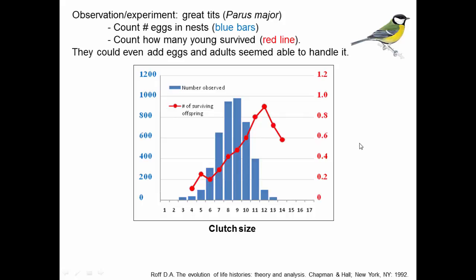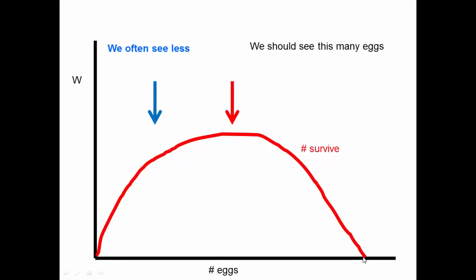This is actually a surprise. The model predicted stabilizing selection causing egg number to center around maximum fitness. But when we look in nature, birds are laying fewer eggs than we would expect based on directly observing the number of offspring that survive. Conceptually, there's a fitness peak at a certain egg number, but in nature we often see less. So we might ask: what is the cause of there being fewer offspring than we would expect?